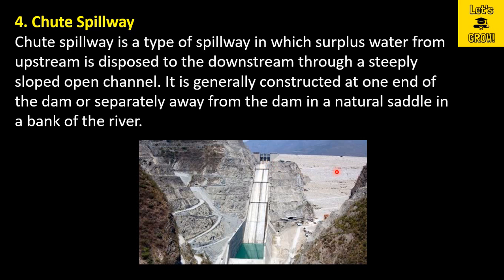These chute spillways are provided at the bank of the dam on either side, or you can provide it in a natural saddle point if the topography meets that requirement. Otherwise, you can provide it at either end. The slope of the chute spillway is very high so that water flows through at high velocity.